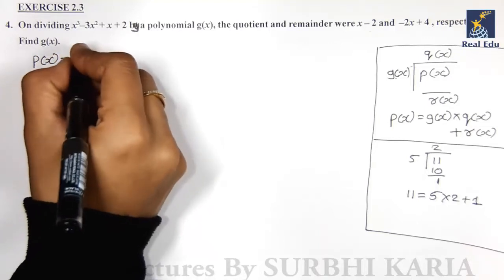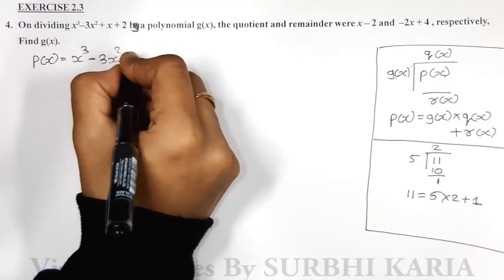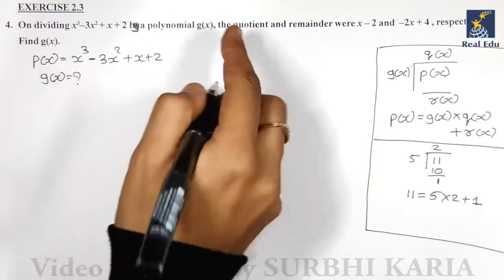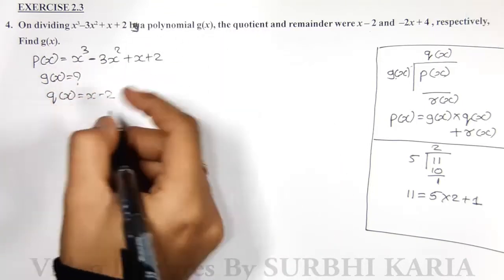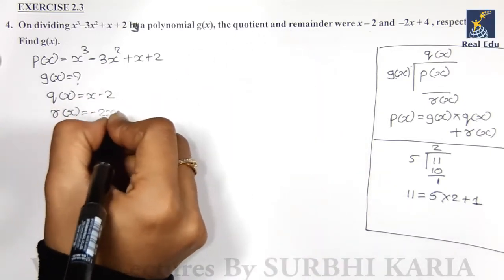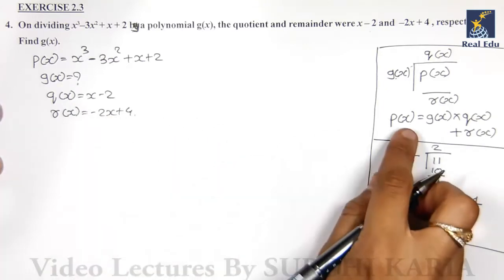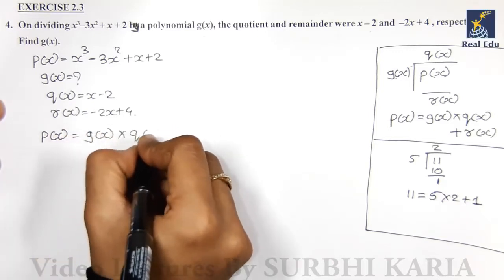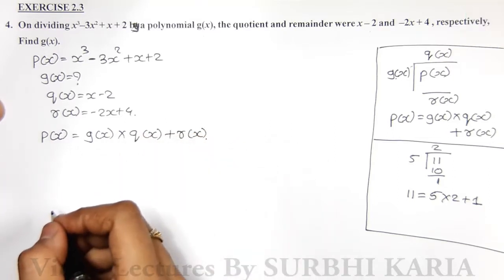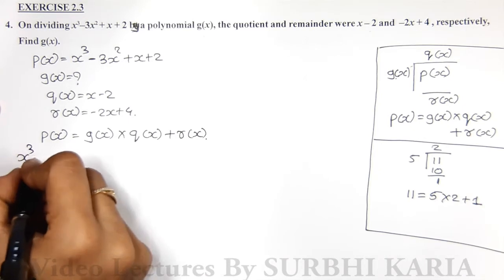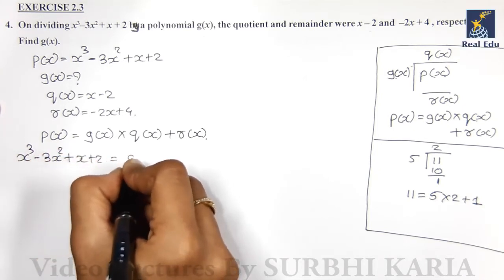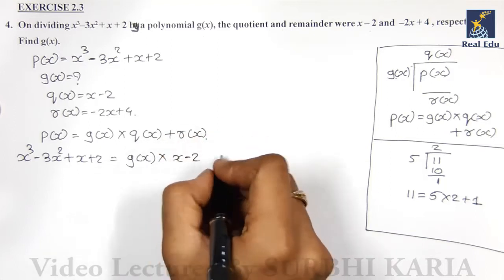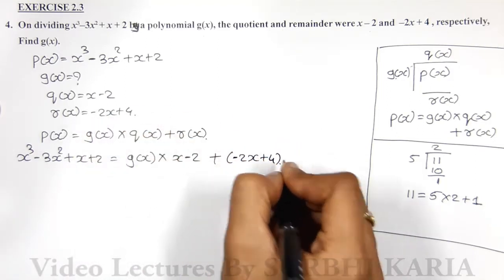What is given here: p(x) equals x cubed minus 3x squared plus x plus 2. g(x) is not given — g(x) is what we are supposed to find. q(x) is given as x minus 2, and remainder r(x) is given as minus 2x plus 4. We will apply the same equation: p(x) equals g(x) into q(x) plus r(x), and substitute the values.